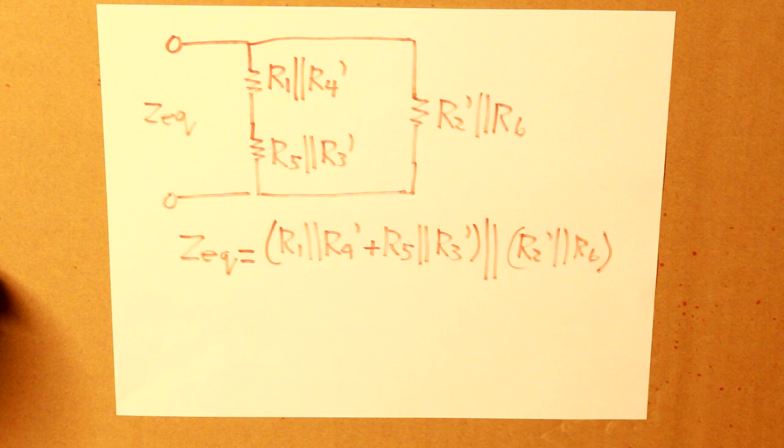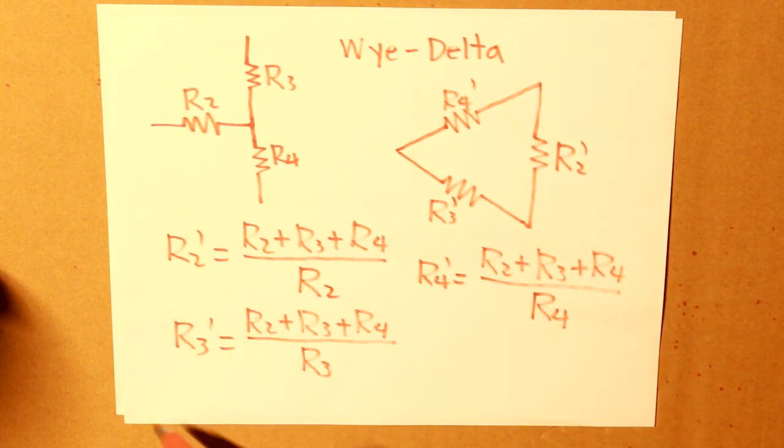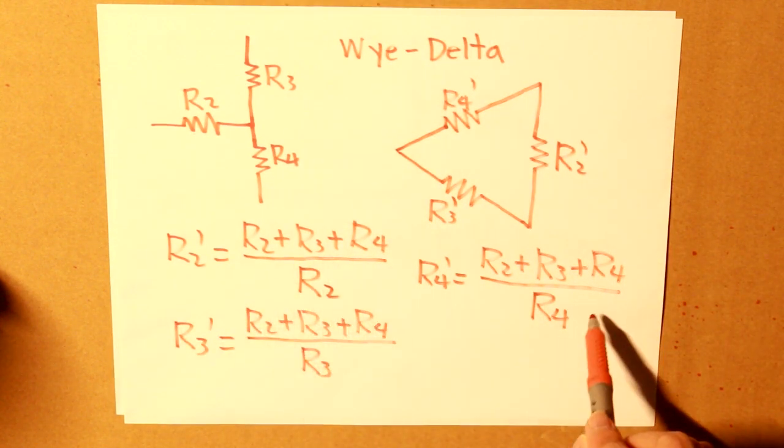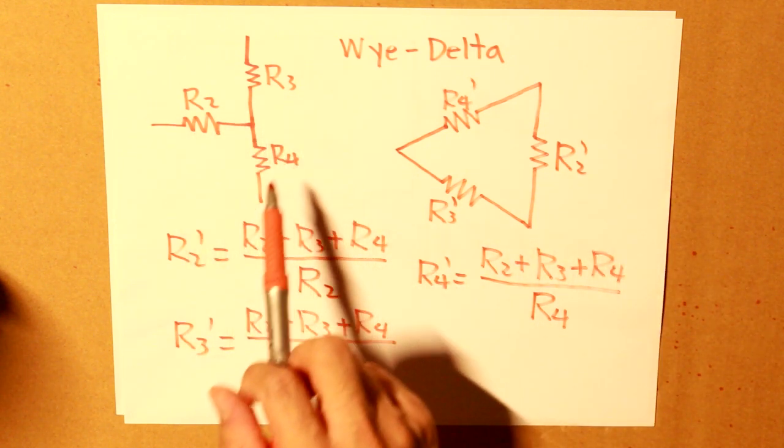And voila, there is our equivalent resistance deduced from a really complicated circuit. And just to highlight, these three terms are equal to the following initial values of the resistance when it used to be in this formation.